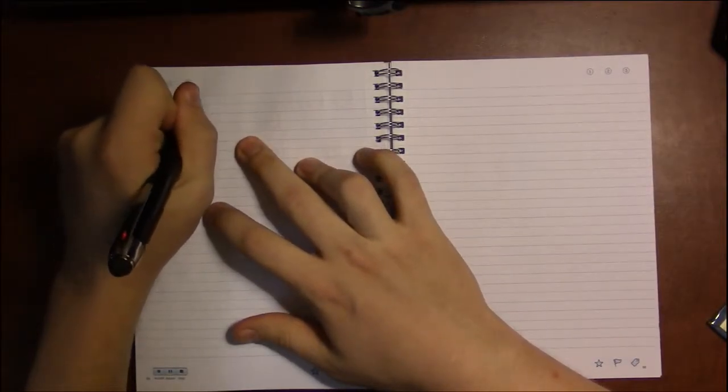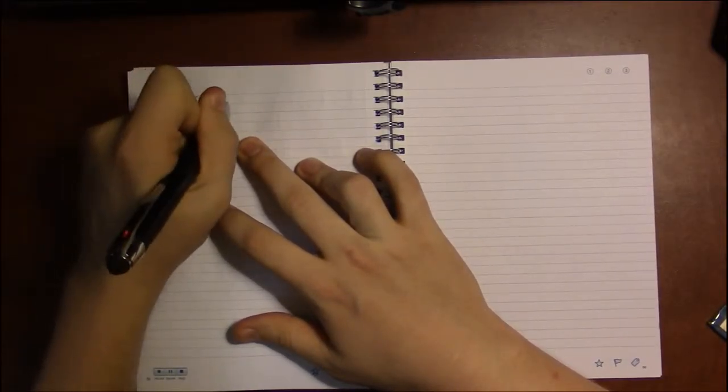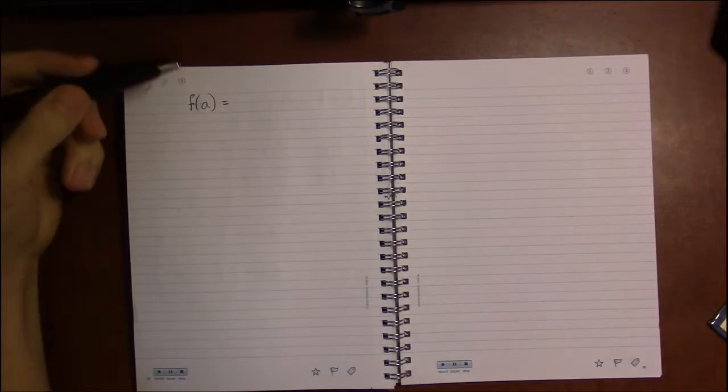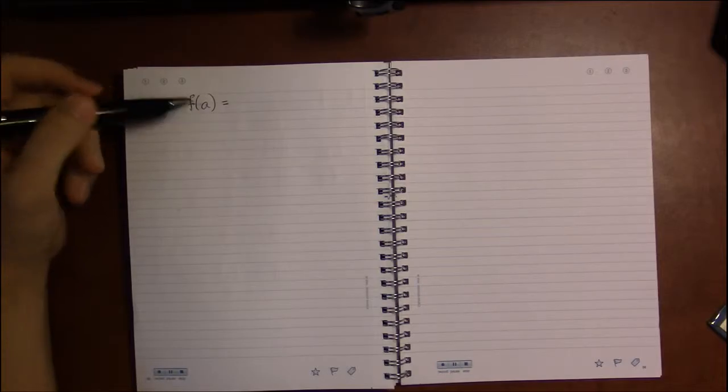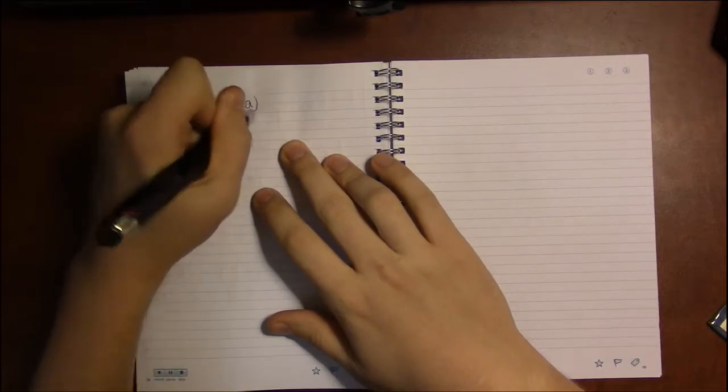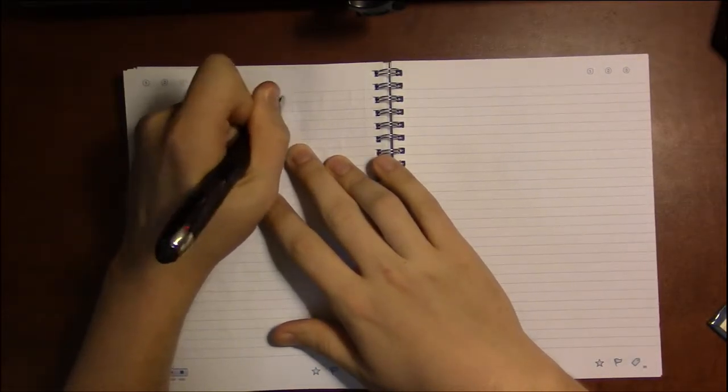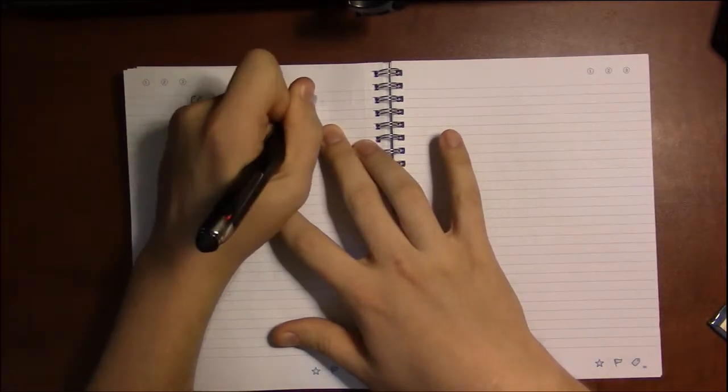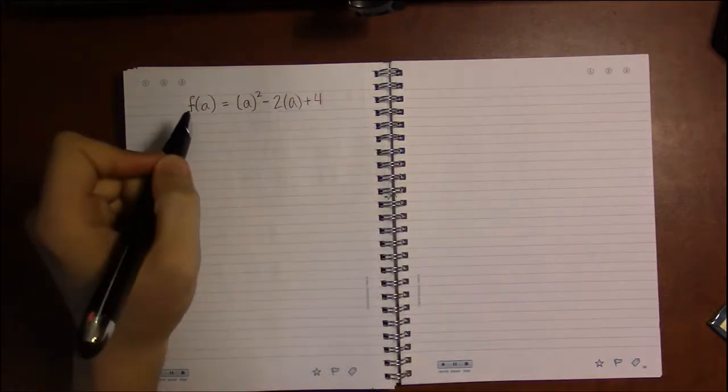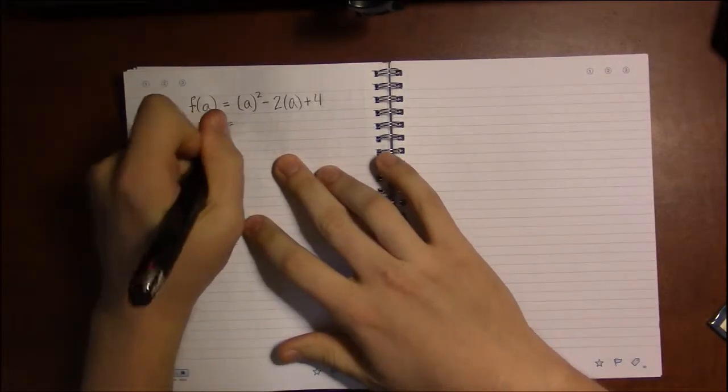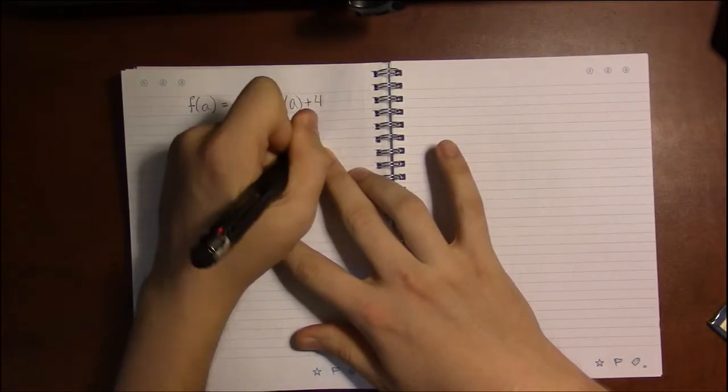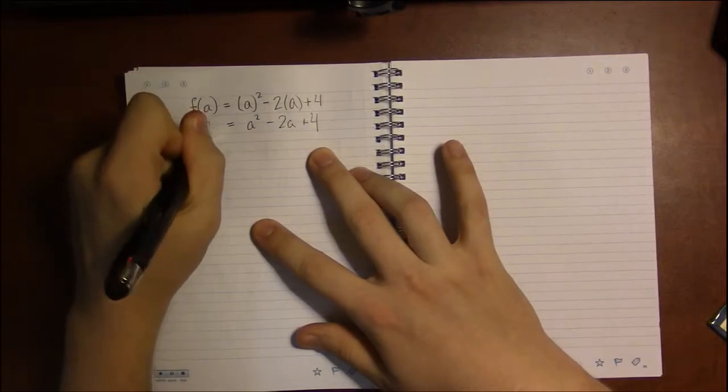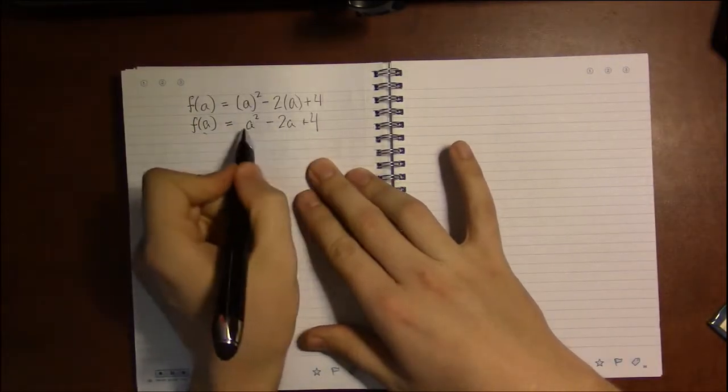So what if we mixed it up a bit? I'm not looking at a number here, I gave you another letter. So if we follow what I said before, just replace x with a every time it occurs on the right hand side. So this is just a² - 2a + 4. That's what f(a) is. When x equals a, this is the output.